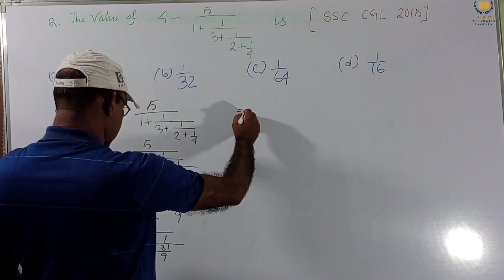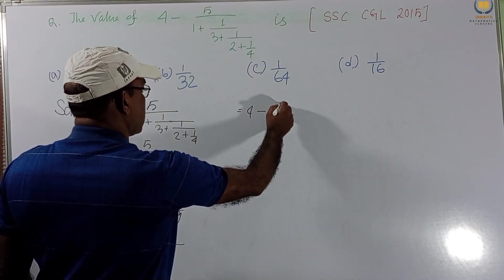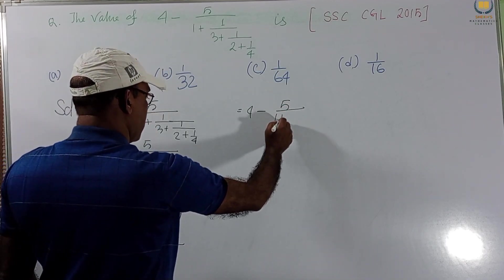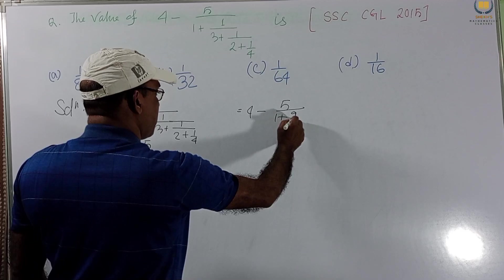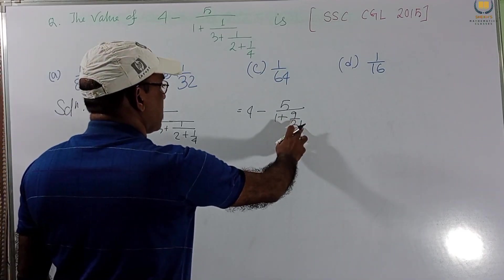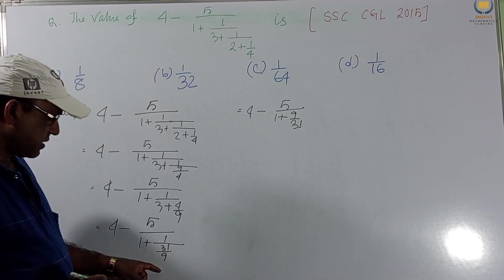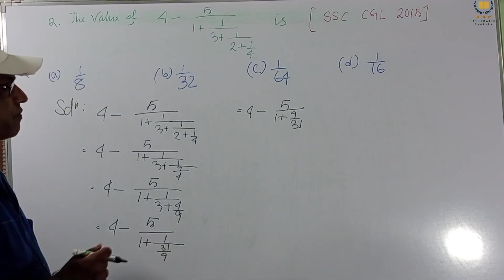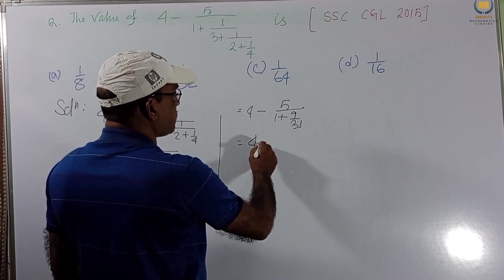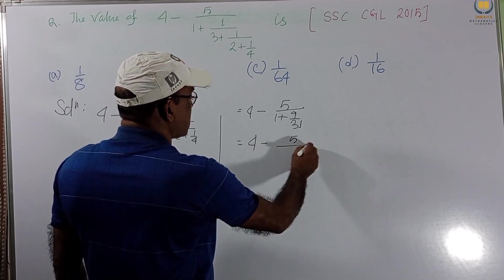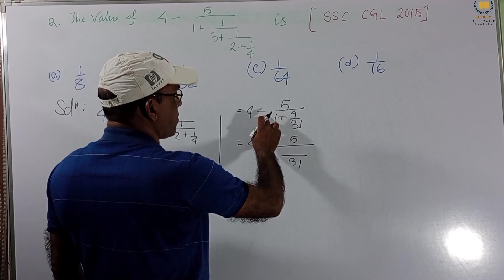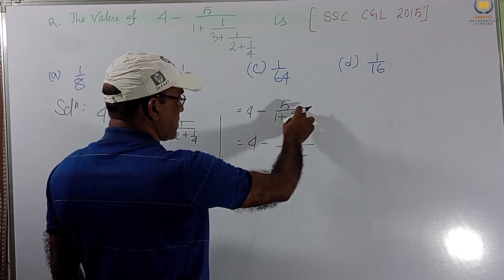this LCM is 9, 27 plus 4, 31 we get. So, this will be this. So, next we get 4 minus 5 by 1 plus 9 by 31. So, we get this one,